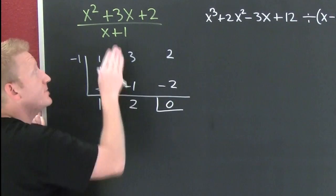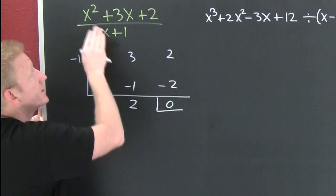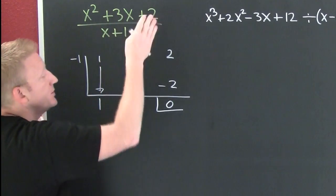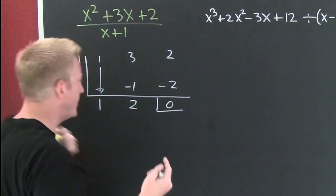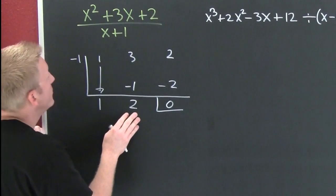And our remainder is 0. What does this mean? This means that x minus 1 is a factor of x squared plus 3x plus 2. You're going to be using something called the factor theorem to determine that.